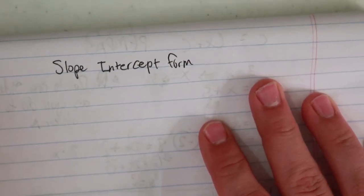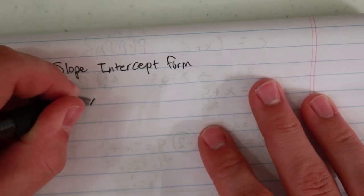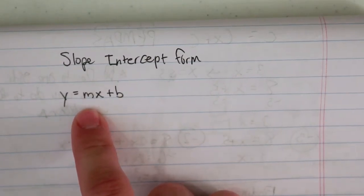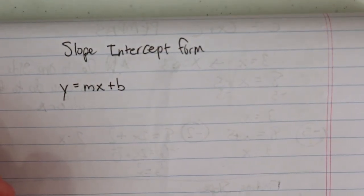All right, so I want to talk about slope-intercept form, also known as y equals mx plus b. This is the general rule of it in all letters, so first I want to label what each of these things mean.